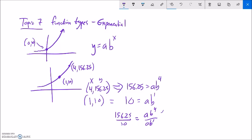So if I do this division, that divided by 10, that's just 15.625 equals a divided by a cancels out. b to the fourth divided by b to the first, that's just b cubed.